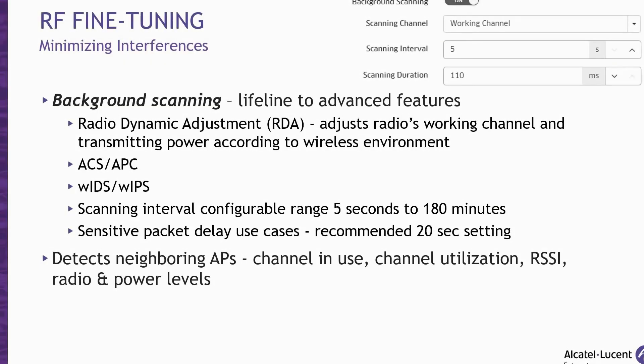Background scanning is under the umbrella of smart load balancing features and is an enablement basis for some advanced features such as the Radio Dynamic Adjustment (RDA) technology, auto channel selection, auto power control, and other functionality that may require adjustment to present the best quality of connectivity experience. When background scanning is turned off, rogue AP detection suppression will stop and the RDA adjustment technology will drop its precision. By default, background scanning is enabled and it's recommended to stay that way. For RF fine-tuning purposes, let's look at the Radio Dynamic Adjustment technology and how the Stellar wireless architecture implements it.